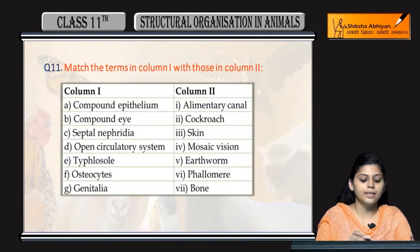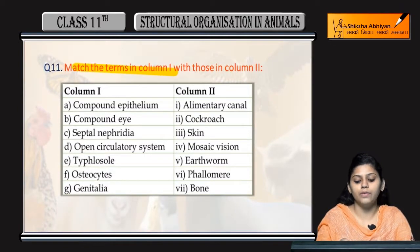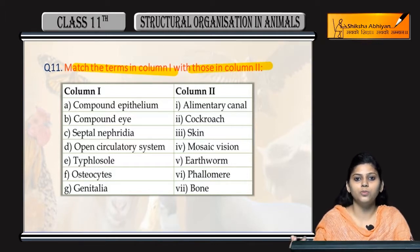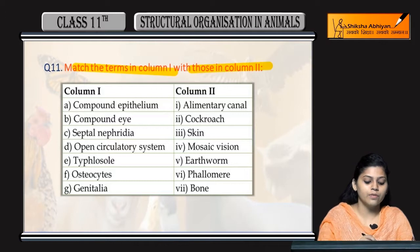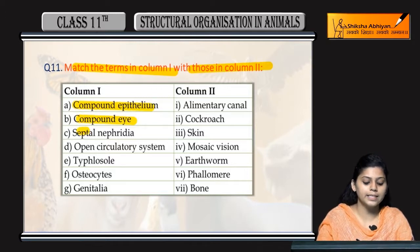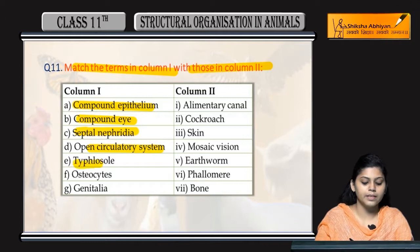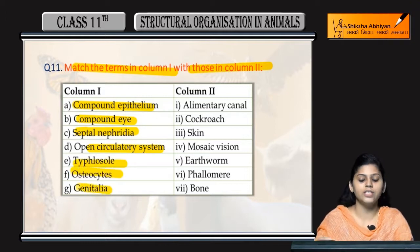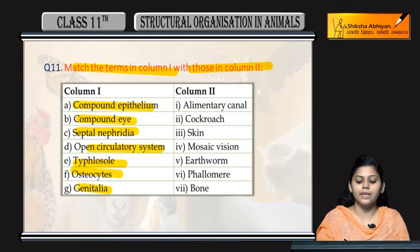Next, question number 11: match the terms in column 1 with those in column 2. Column 1 mein match karna hai ki korn kisse related hai. First one is compound epithelium, compound eye, septal nephredia, open circulatory system, typhlosol, osteocytes and genitalia.